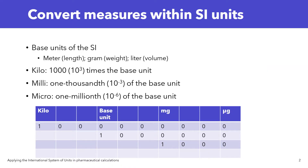Let's talk about how to convert within the SI system. The SI system has base units. Meter is the base unit for length. Gram is the base unit for weight. Liter is the base unit for volume. When we look at the prefix kilo, it's 1,000 times the base unit. So, for example, 1 kilogram is 1,000 grams.